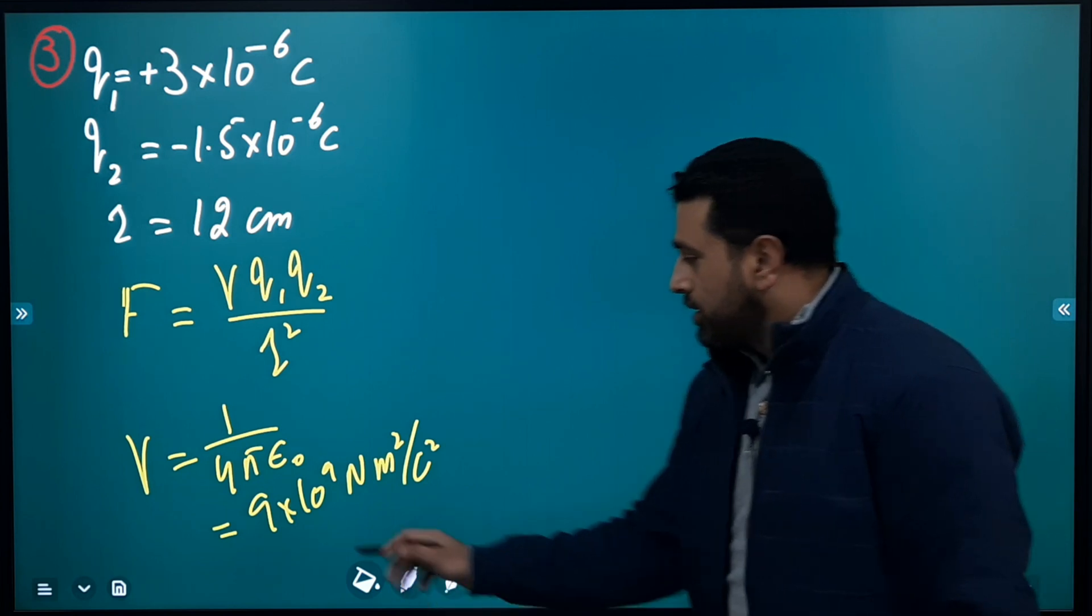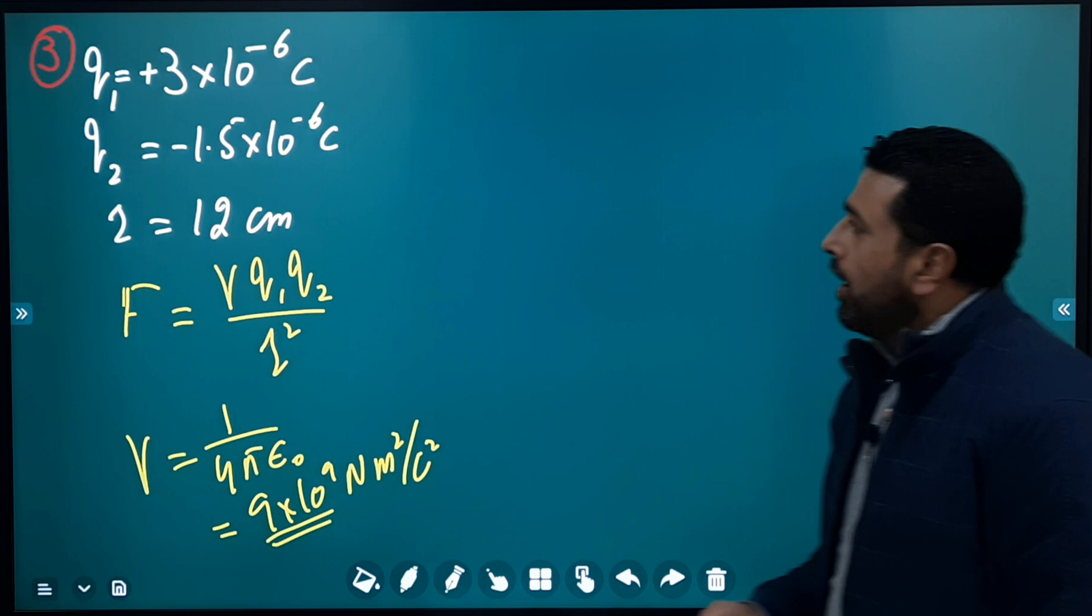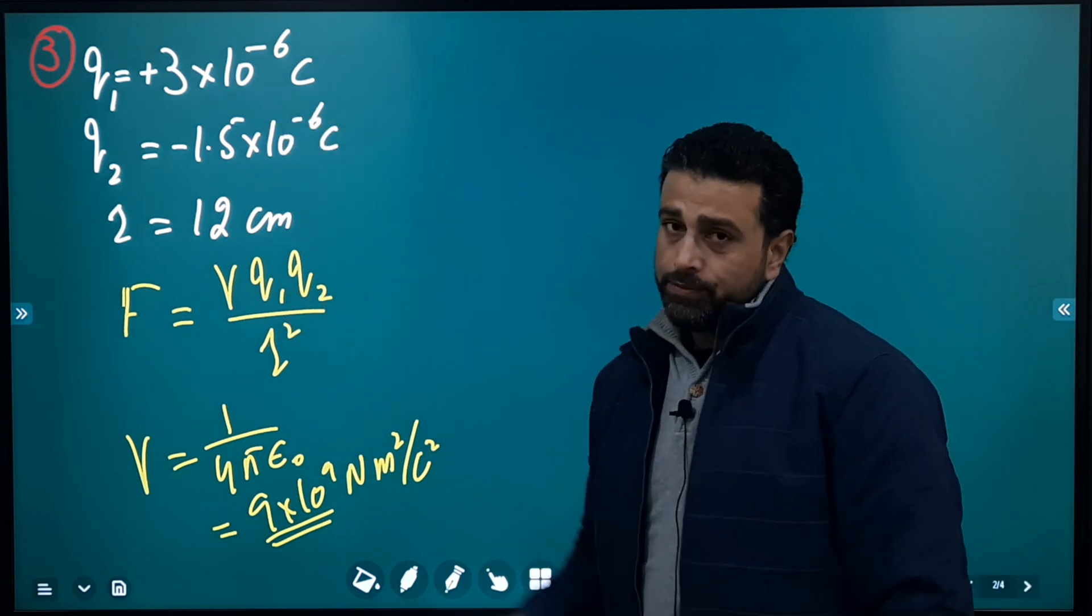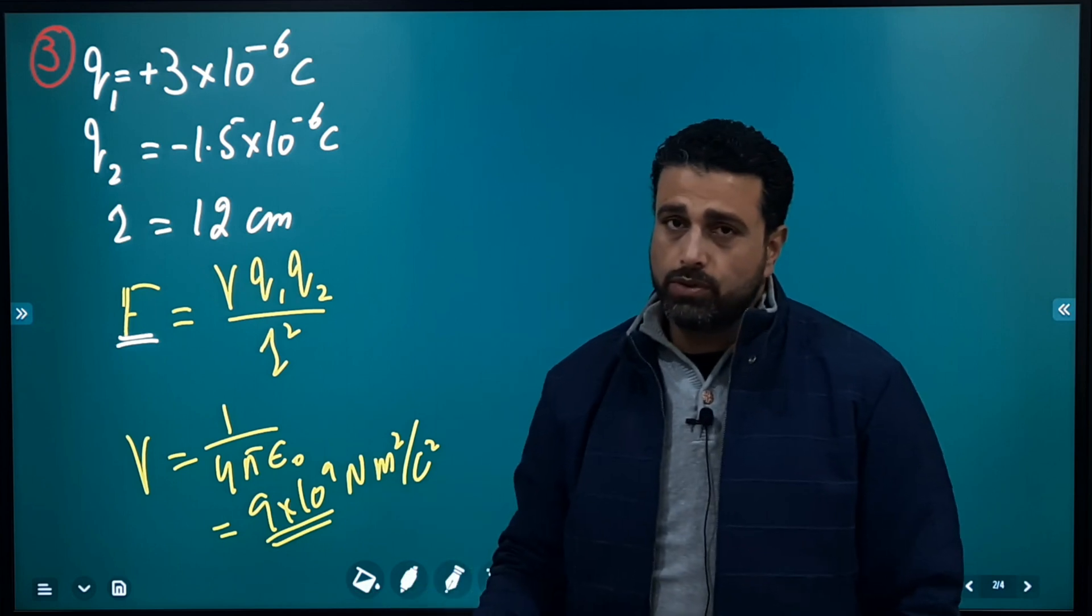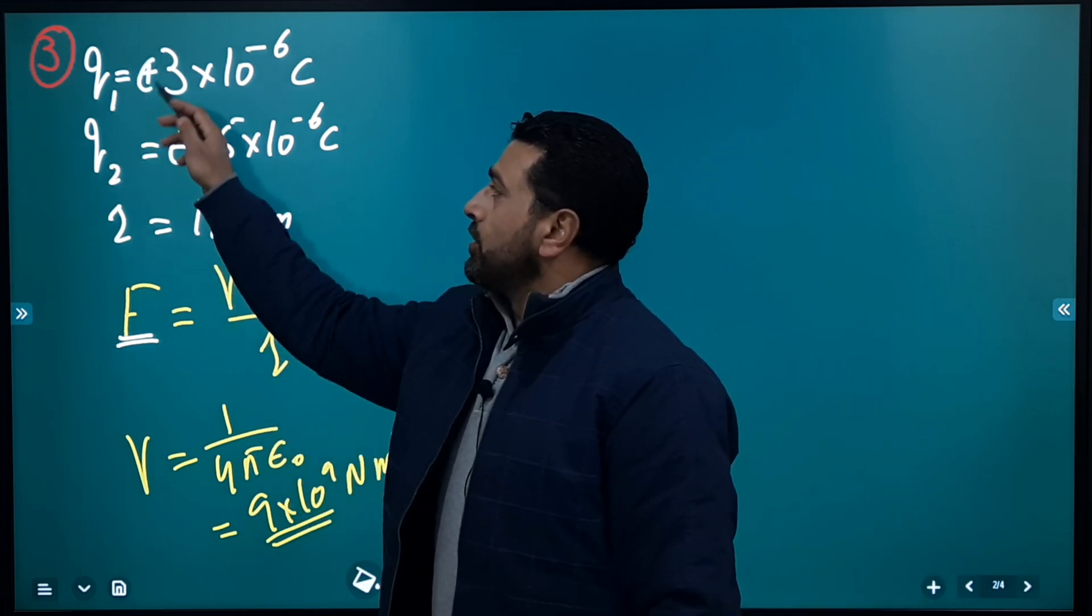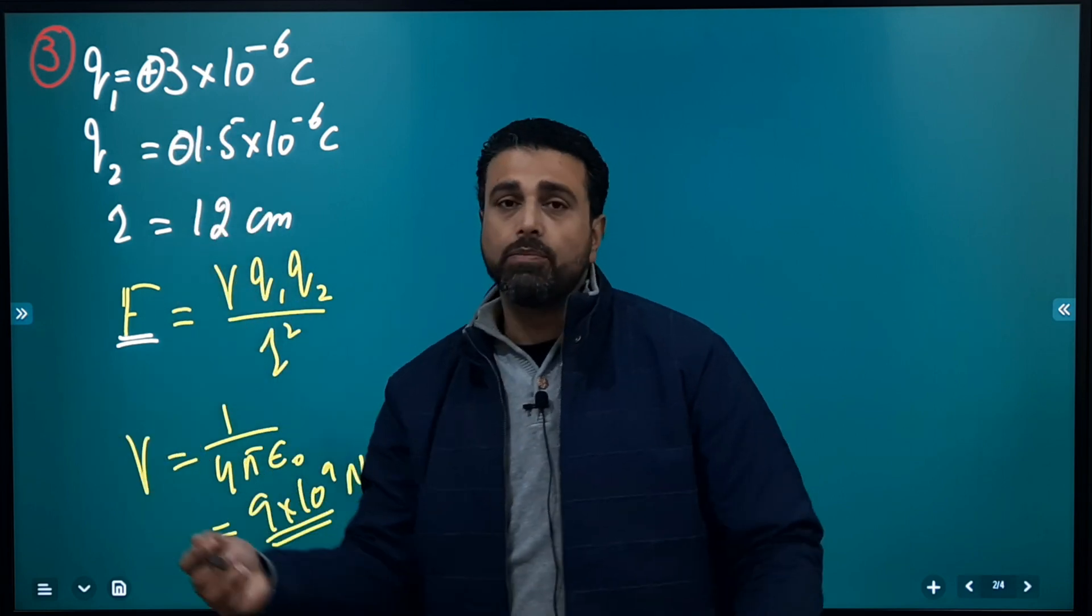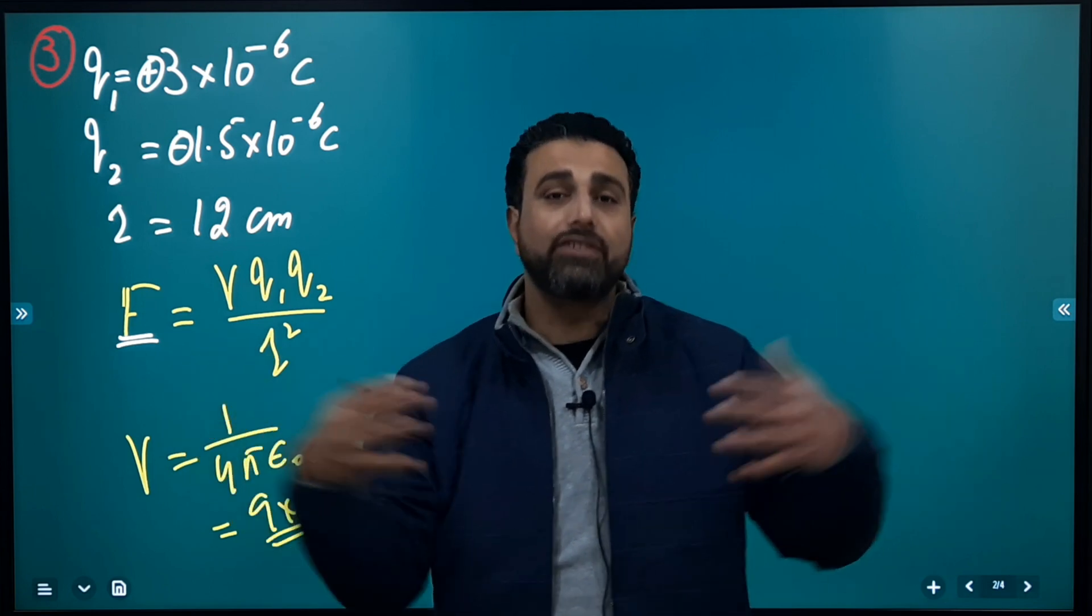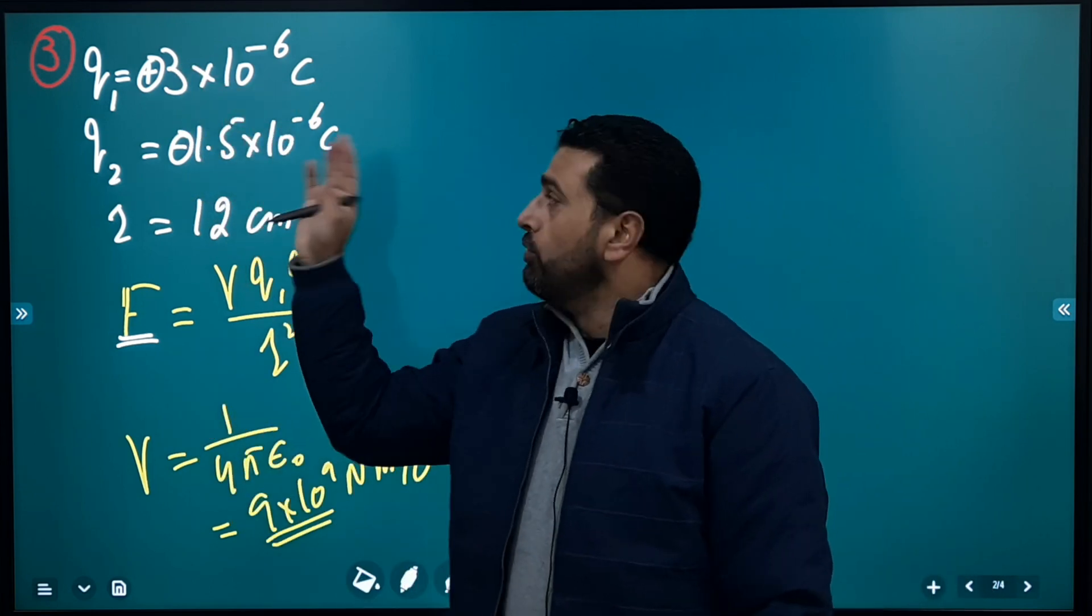So this value is in SI system. Q₁ and Q₂ - we're just interested in finding the magnitude of the force, so minus sign and plus sign have nothing to do with it. The minus and plus signs tell you the two charges are unlike, they're attracting each other. The force between them is attractive in nature. So we have nothing to do with minus and plus, we'll just use the values to find out the magnitude of this force F.